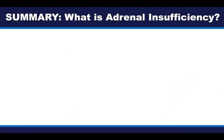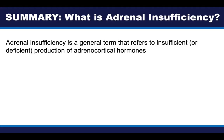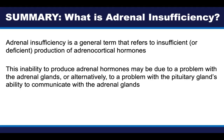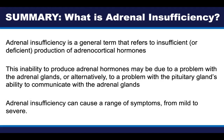To summarize this introductory video: adrenal insufficiency is a general term that refers to insufficient or deficient production of adrenocortical hormones. This inability to produce adrenocortical hormones may be due to a problem with both adrenal glands, or alternatively due to a problem with the pituitary gland's ability to communicate with the adrenal glands via ACTH. Adrenal insufficiency can cause a range of symptoms from mild to severe, and we'll talk about all of these in much more detail in subsequent videos. This ends the first video — you can now continue to part two.